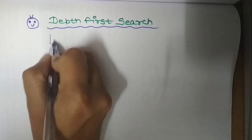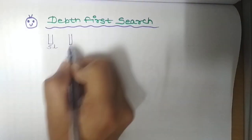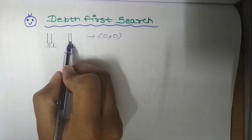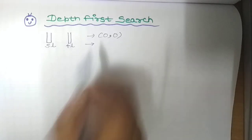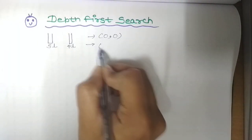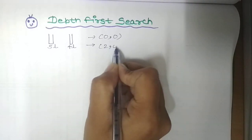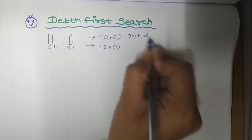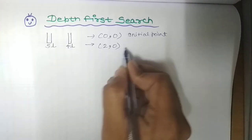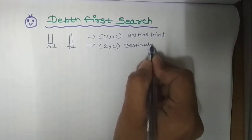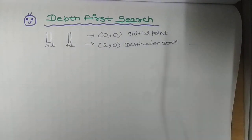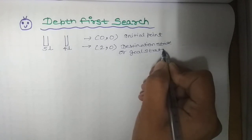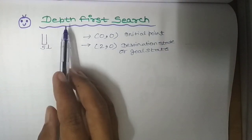Suppose you have two water jugs: one with a capacity of 5 liters and another with a capacity of 4 liters. Your initial state is 0,0, meaning both jugs are empty. Your goal state or destination state is 2,0. This is the same setup as in the breadth first search question — 0,0 is your initial node and 2,0 is your goal state.